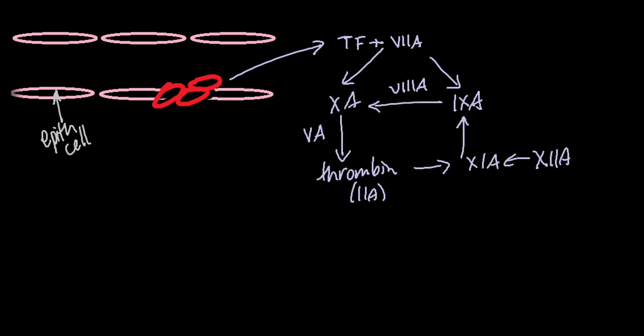In addition, activated factor 12 activates 11 on the surface of activated platelets, which provides an alternative route for generation of thrombin. Let's take a moment to review how clotting factors relate to PT and PTT.